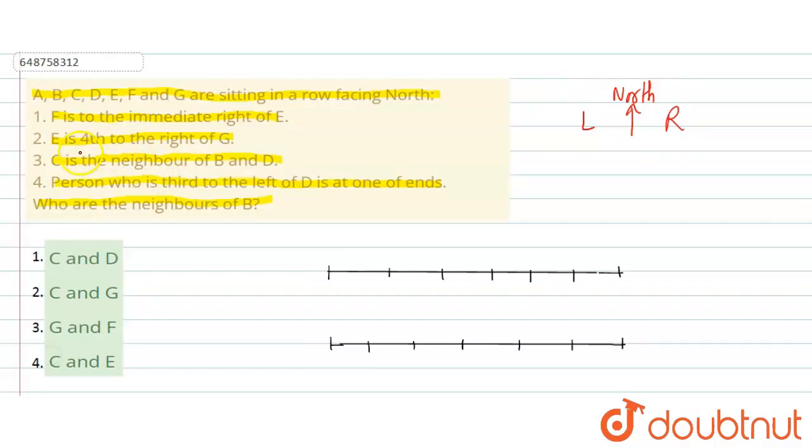Now, given that F is the immediate right of E. F is the immediate right of E. Then given that C is the neighbor of B and D. C is the neighbor of B and D.